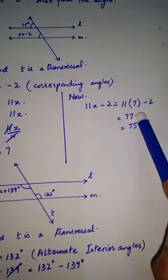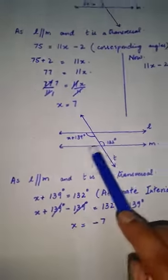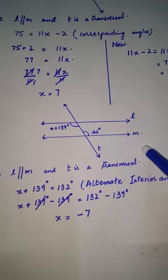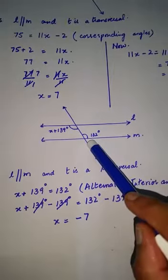75 when putting in the values. Next, question number 2: again there are two parallel lines l and m, and a transversal t cuts them. Two different angles are formed on